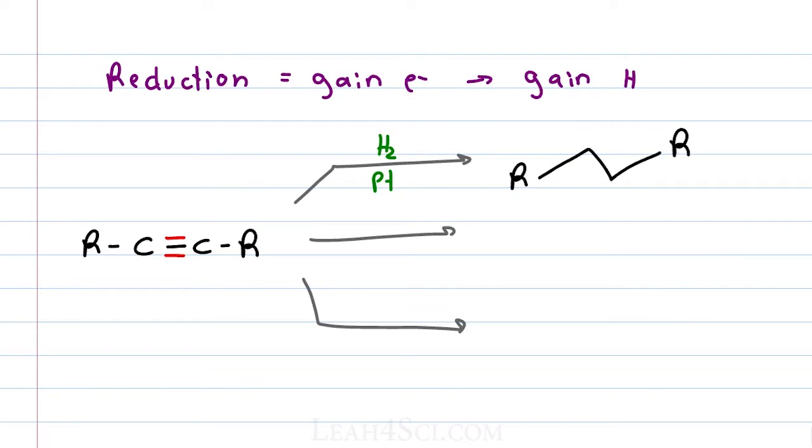This reaction will attack both pi bonds giving us two sets of hydrogen atoms being added. We'll show one added for the first pi bond that we break and a second set of hydrogen for the second pi bond that we break.